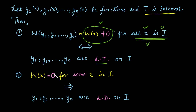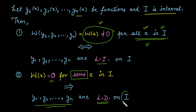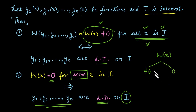If the Wronskian is equal to 0 for even a single value of x — rather than for every x — then the given functions are linearly dependent on the given interval i. In summary: when W(x) is not equal to 0 for every value of x, the functions are linearly independent; if W(x) equals 0, they are linearly dependent.